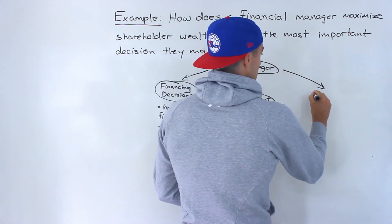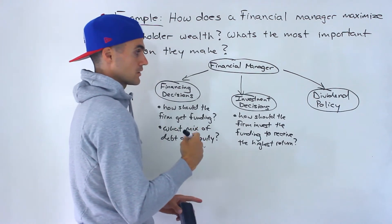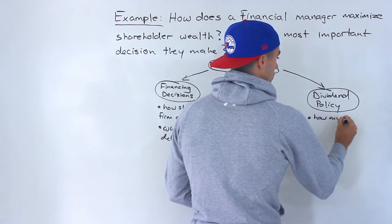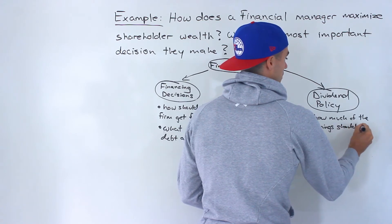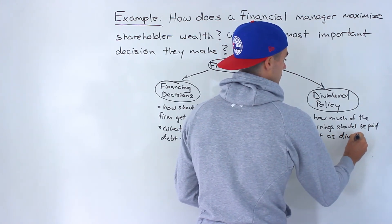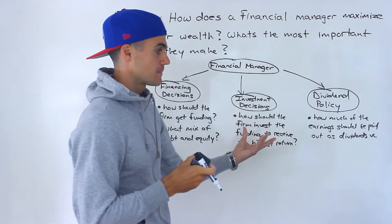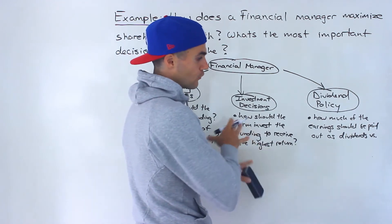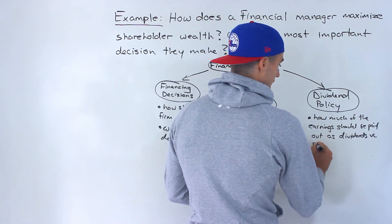After that funding is invested and hopefully getting a return — hopefully the highest return it can — the financial manager has to decide on a dividend policy. The dividend policy is deciding how much of the earnings should be paid out as dividends versus how much should be retained in the company. There are only two things that can happen with earnings: they get paid out to shareholders as dividends, or those earnings get retained in the company for further growth, usually for expansion.